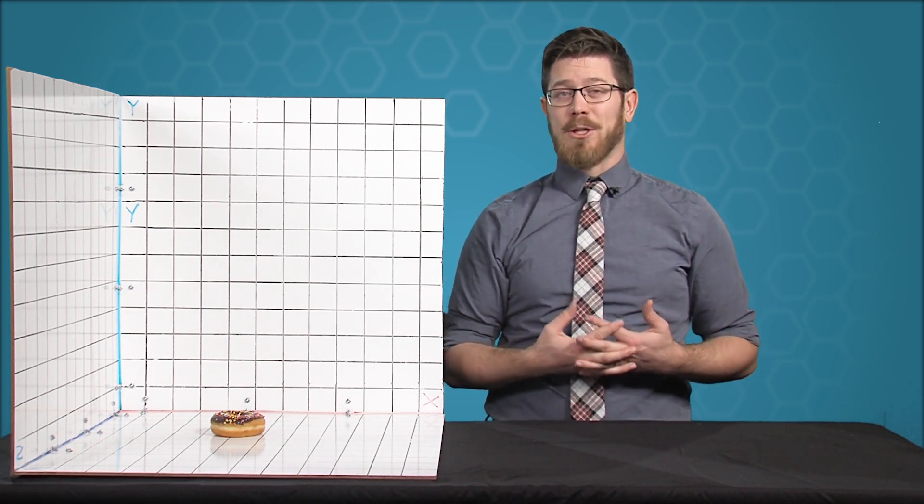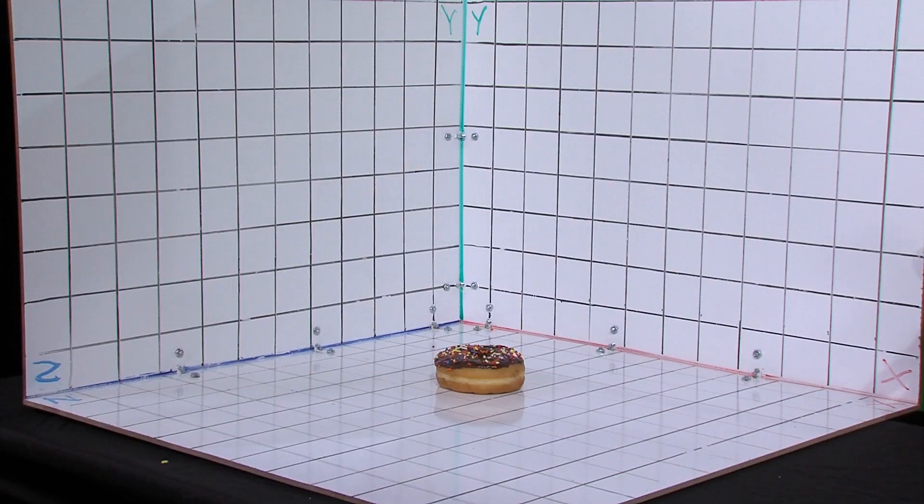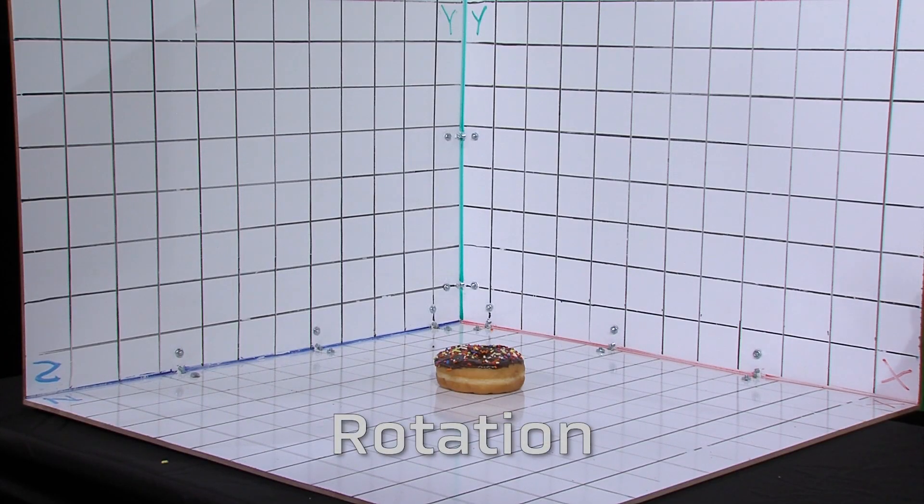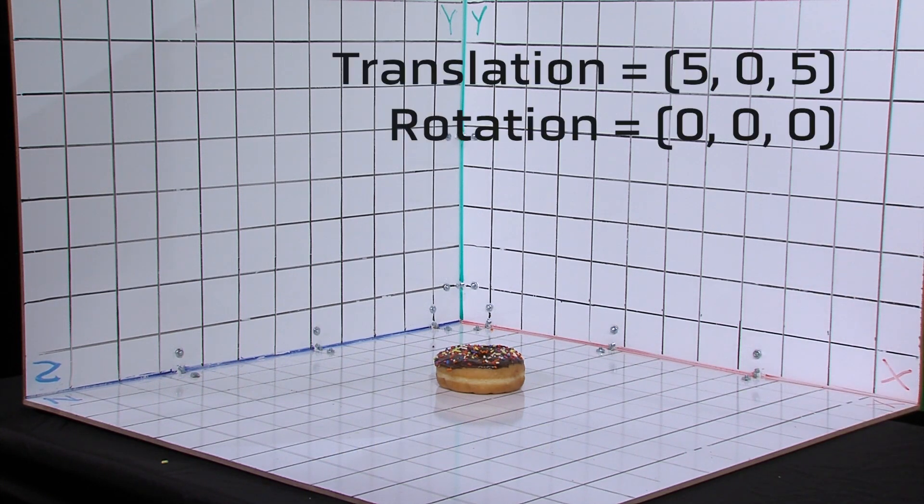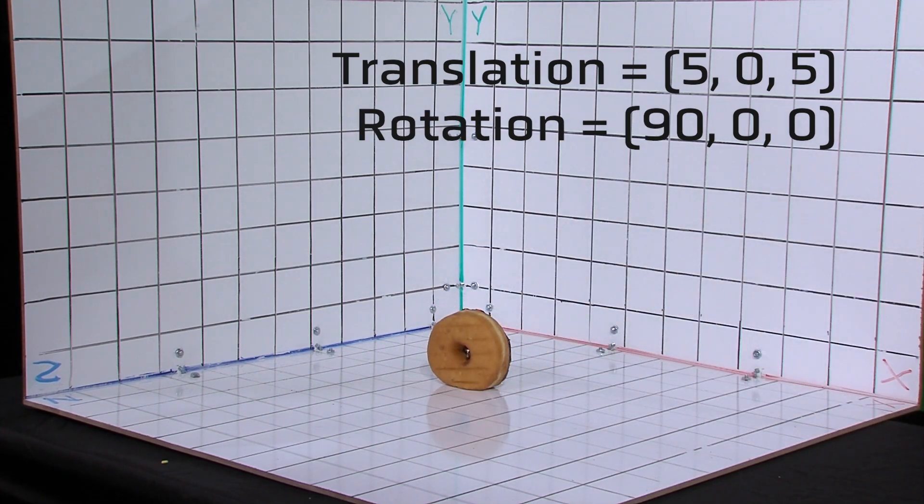In fact, the computer by default stores a translation of 0, 0, 0 when the object is at the origin. The second attribute in a transformation is its rotation, which establishes an object's orientation. When I rest the donut here on the table, the rotation values around its x, y, and z axes are all 0. But if I stand the donut up on its side, I've now rotated it by 90 degrees around the x-axis.